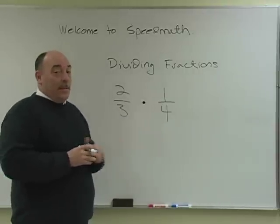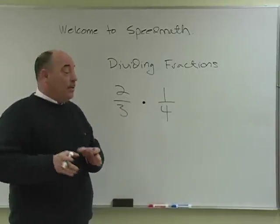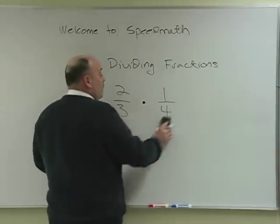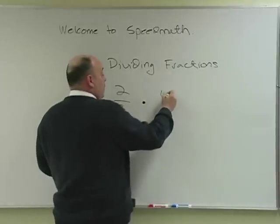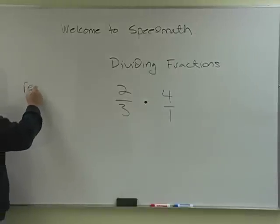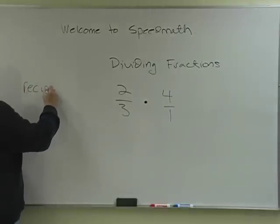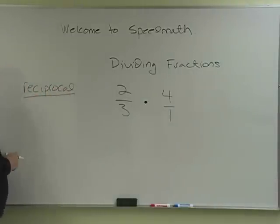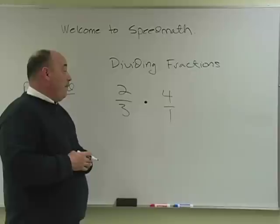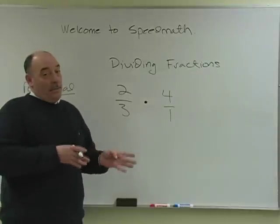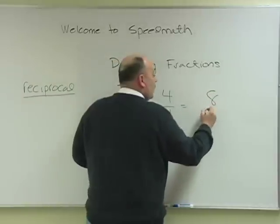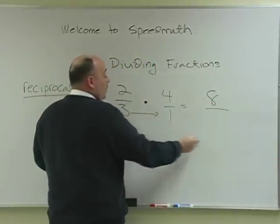If I do that, the only thing I have to remember is to take this fraction and flip it. We call this the reciprocal — R-E-C-I-P-R-O-C-A-L — or it's the inverse. So the inverse of 1 over 4 is 4 over 1. Going back to the previous lesson, we know that 2 times 4 is 8, and we know that 3 times 1 is 3.